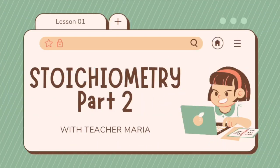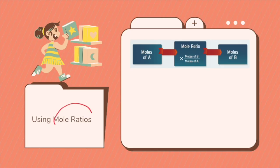Hello everyone, our topic for today is part two of stoichiometry. When we talk about stoichiometry, this is dimensional analysis or the math conversions that starts with one substance and ends with a different substance. It uses coefficients from a balanced equation to create your mole ratio.